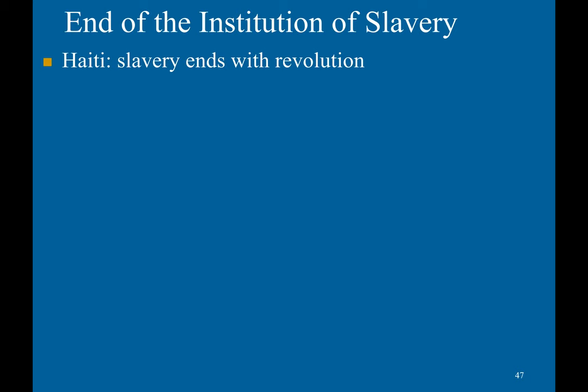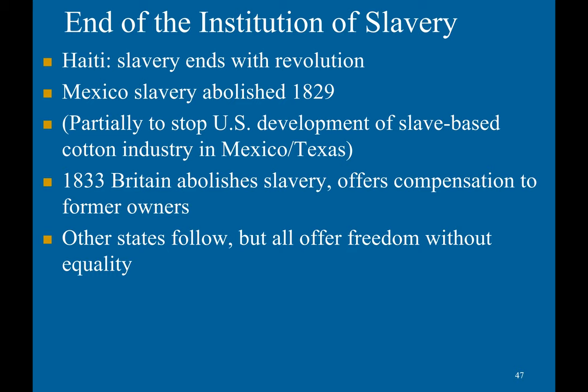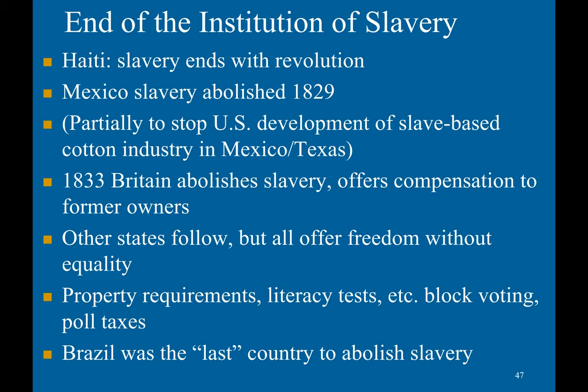In Haiti, slavery ended with the revolution. In Mexico, it was abolished in 1829 — partially to stop the U.S. development of a slave-based cotton industry in Mexican Texas. In 1833, Britain abolished slavery and offered compensation to former owners. Other states followed, but all offered freedom without equality, imposing property requirements, literacy tests, and poll taxes to weaken the power of the newly freed slaves.